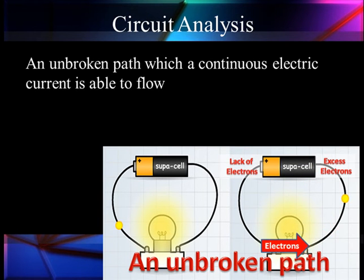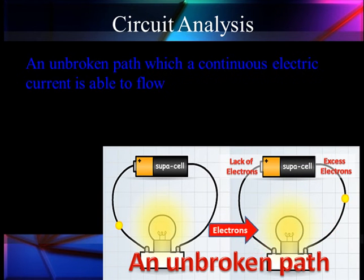Let's talk about circuit analysis. We're going to have electrons leaving one side of a battery and returning to the other. It must be an unbroken path with continuous current flow.